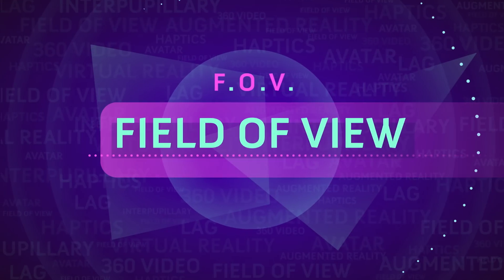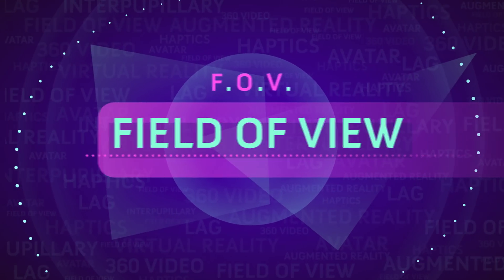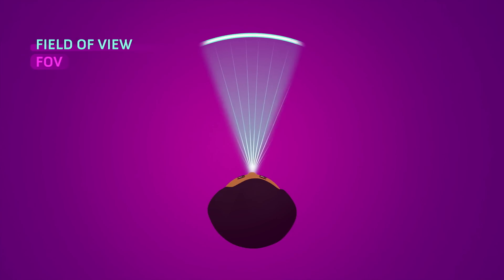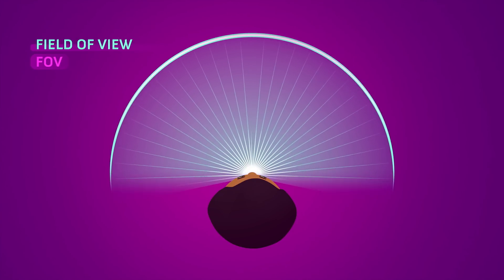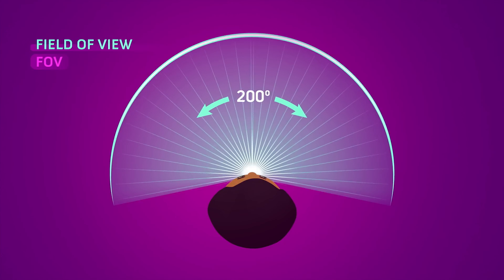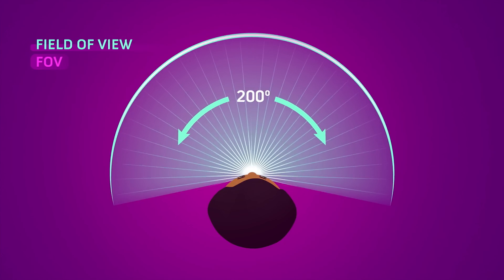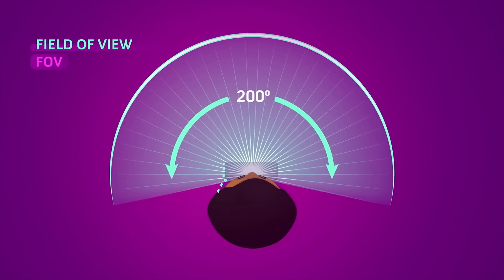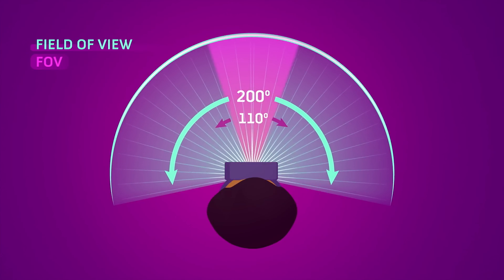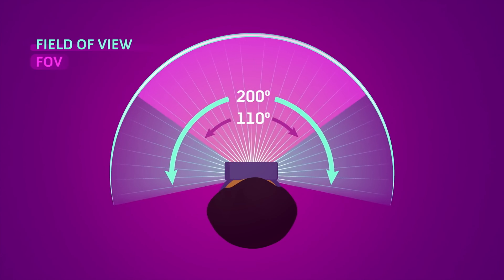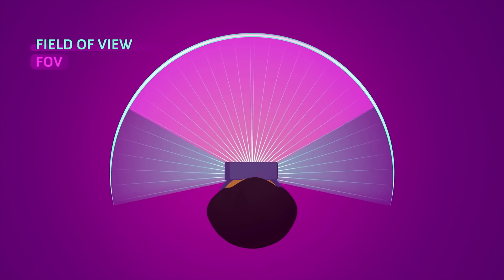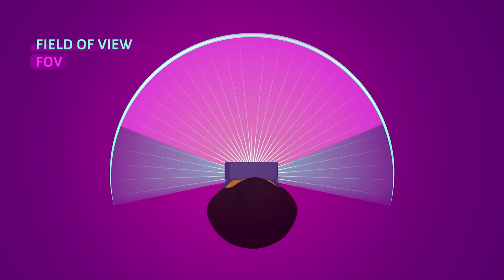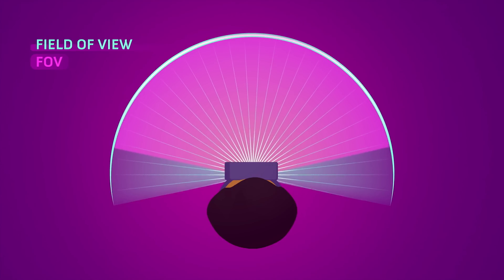FOV, field of view, is the angle of degrees in your visual field. The human eye FOV is about 200 degrees. Premium headsets are currently about 110 degrees. Higher FOVs give higher levels of immersion.